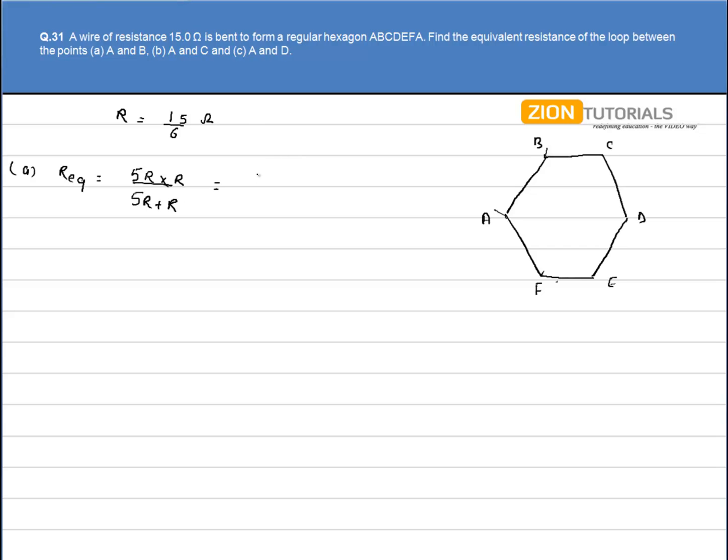So we get value as 5R by 6 that is 5 times 15 by 6 into 6. So on solving we get value as 2.08 ohms.